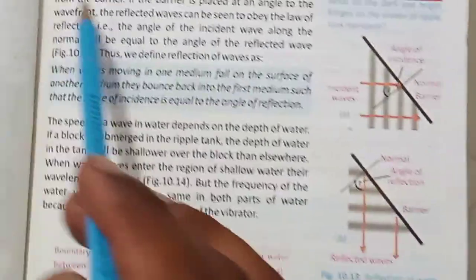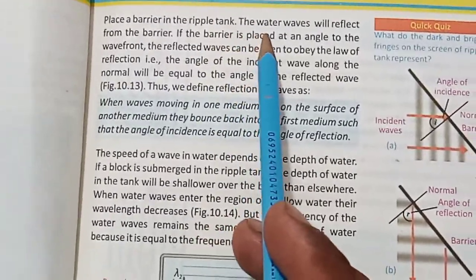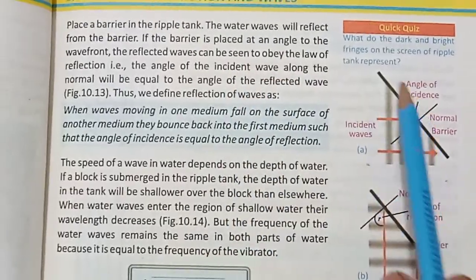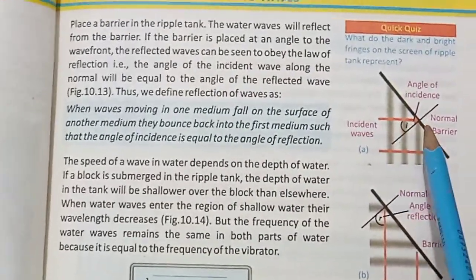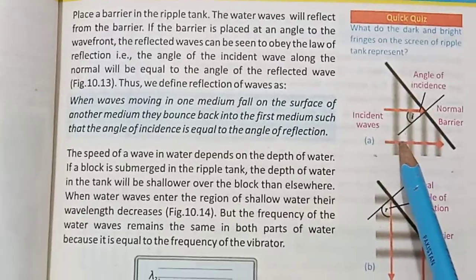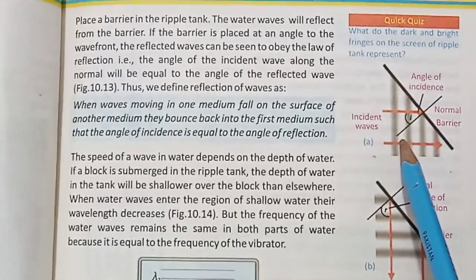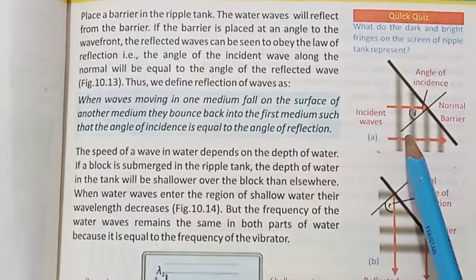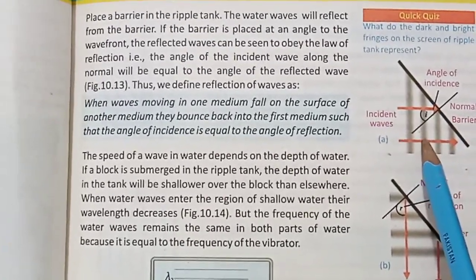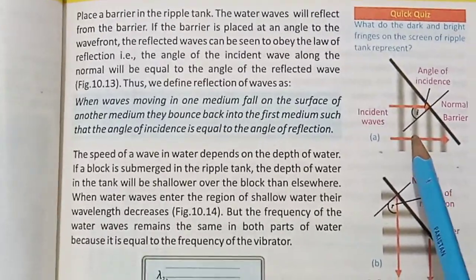First of all, we will put a barrier in the ripple tank. Water waves will reflect from the barrier. When we put a barrier, the waves will reflect. You know the reflection property — we have learned this before. In the previous class, we discussed that light has a reflection property, that it will bounce back. Water waves also bounce back in the same way.